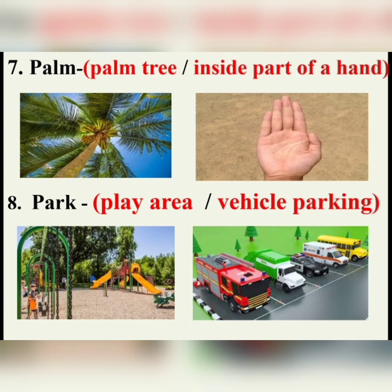Next, 'palm.' It's a type of tree — a palm tree. And the other palm is the inside part of a hand. Then 'park' — it's a play area. And the same word is also used for parking vehicles — a parking area. For example, 'Park your vehicle here' or 'Park your vehicle properly.' That usage is a verb.